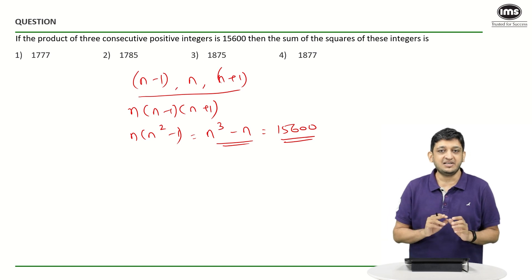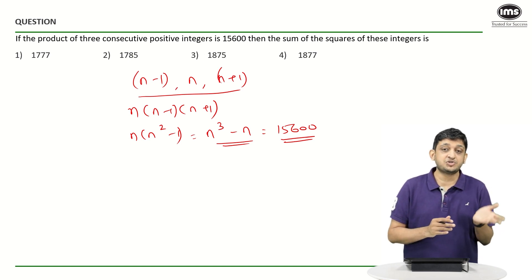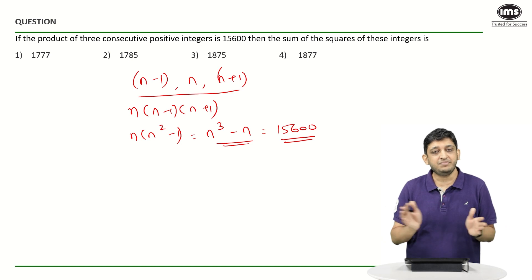If you look at n³-n, it is obvious that n³ is going to be a large number and n is going to be a smaller number. Because if you look at even the first few cubes, you will see that 5³ is 125, 6³ is 216, 7³ is 343.